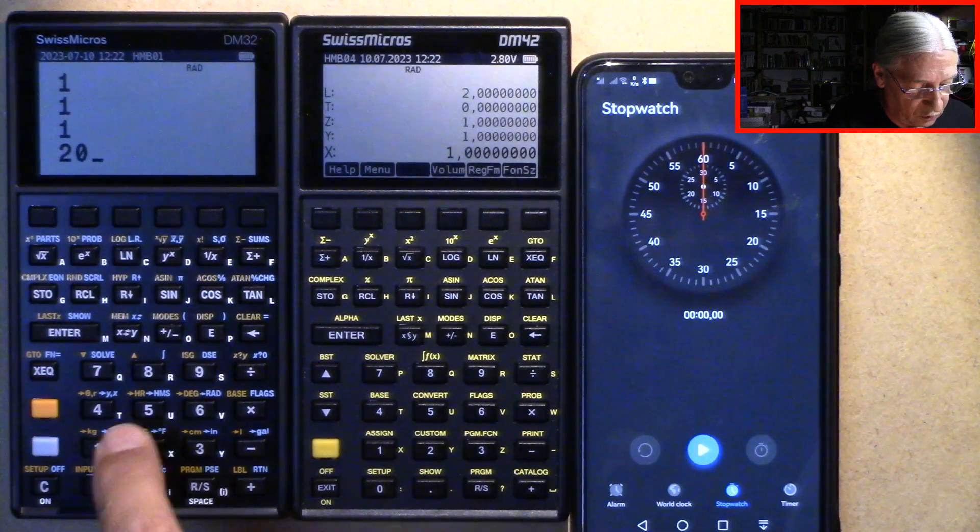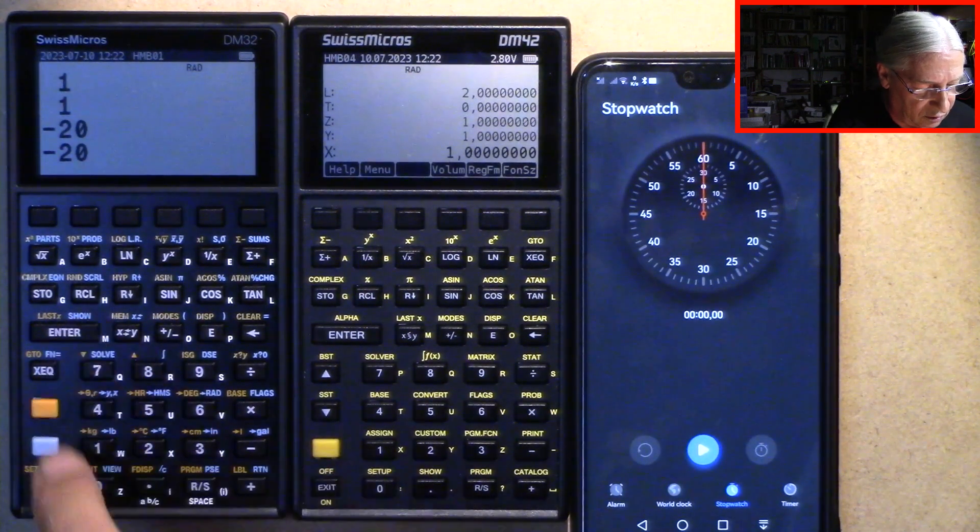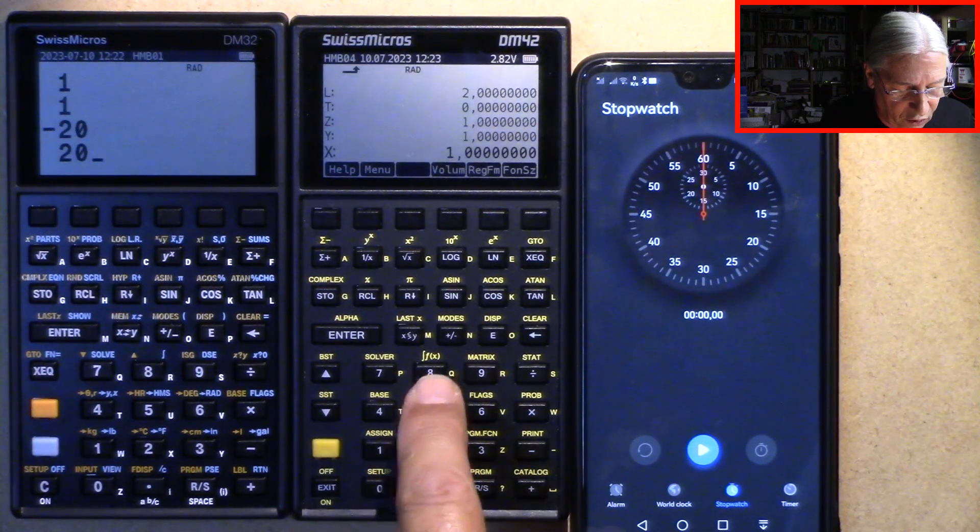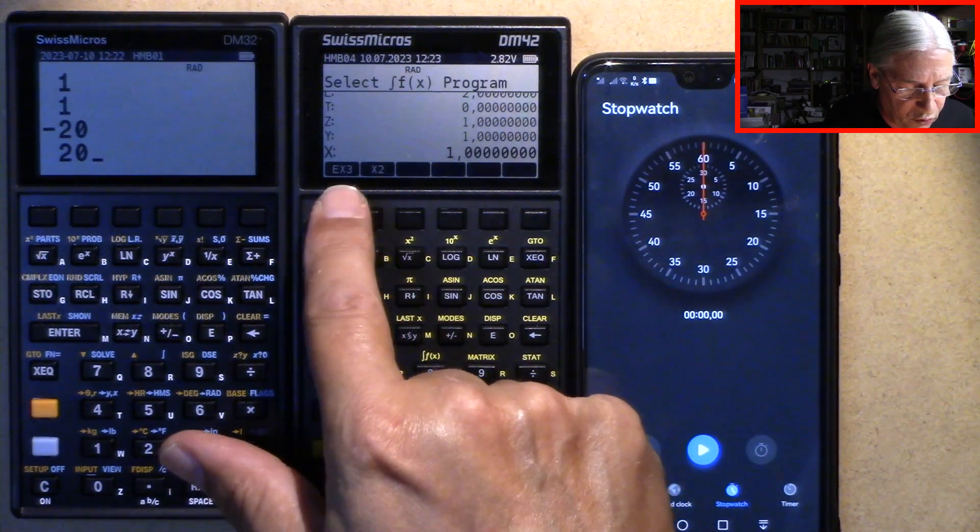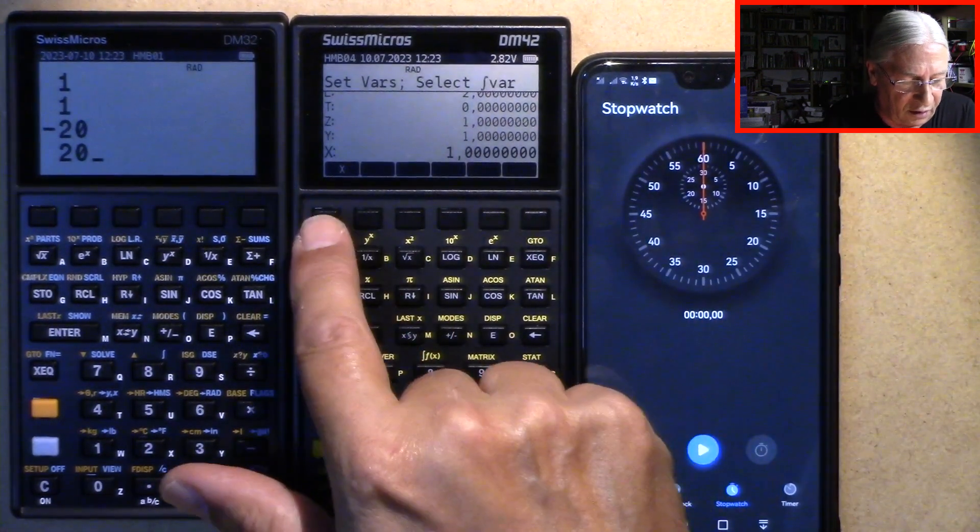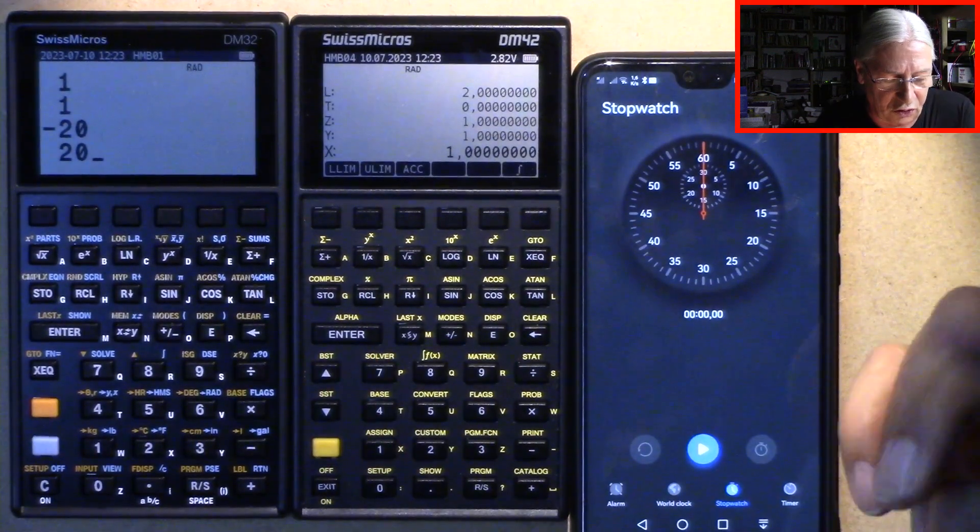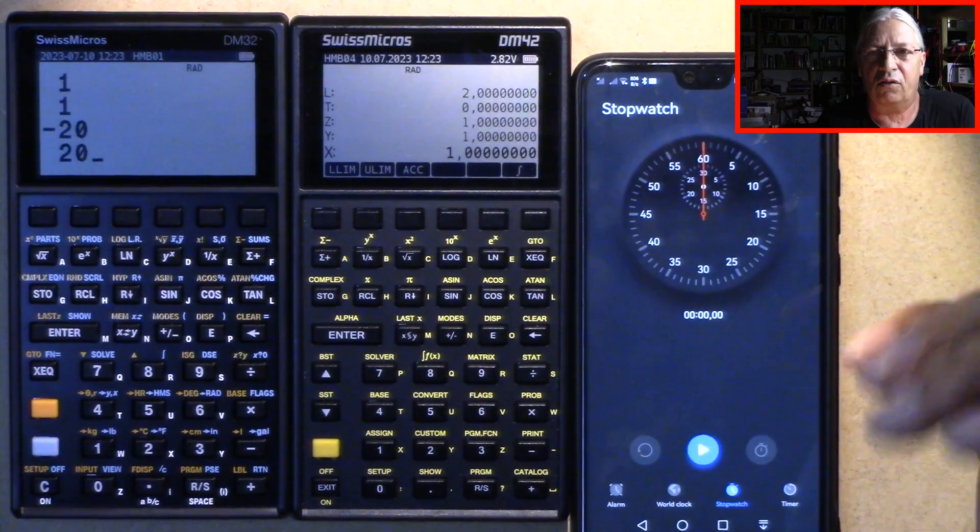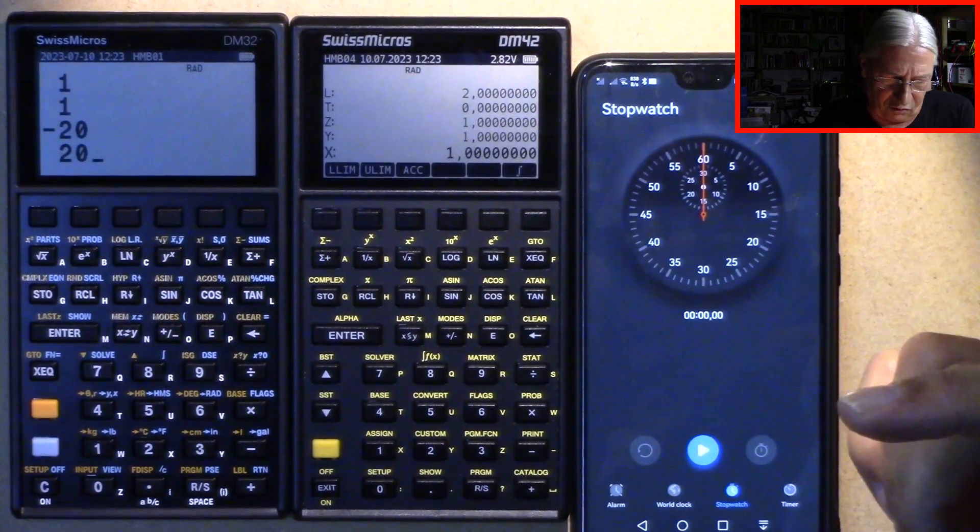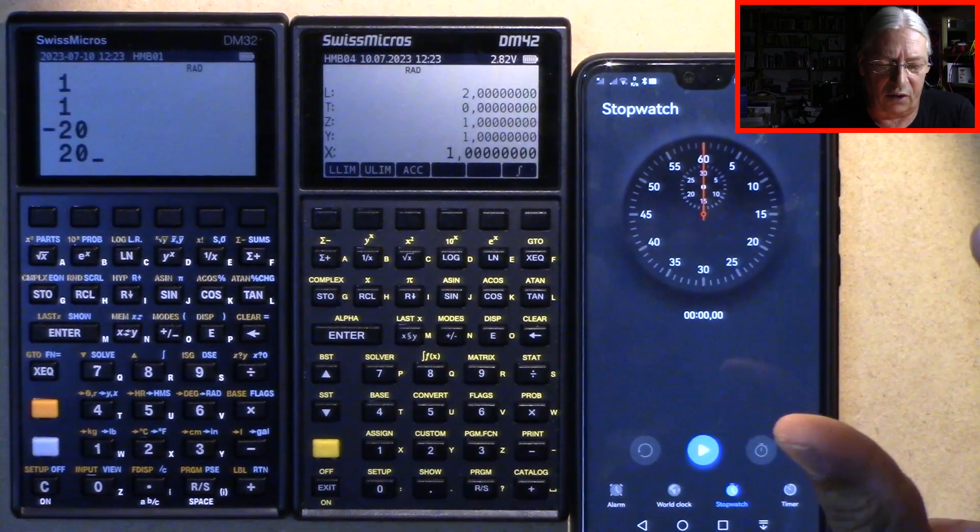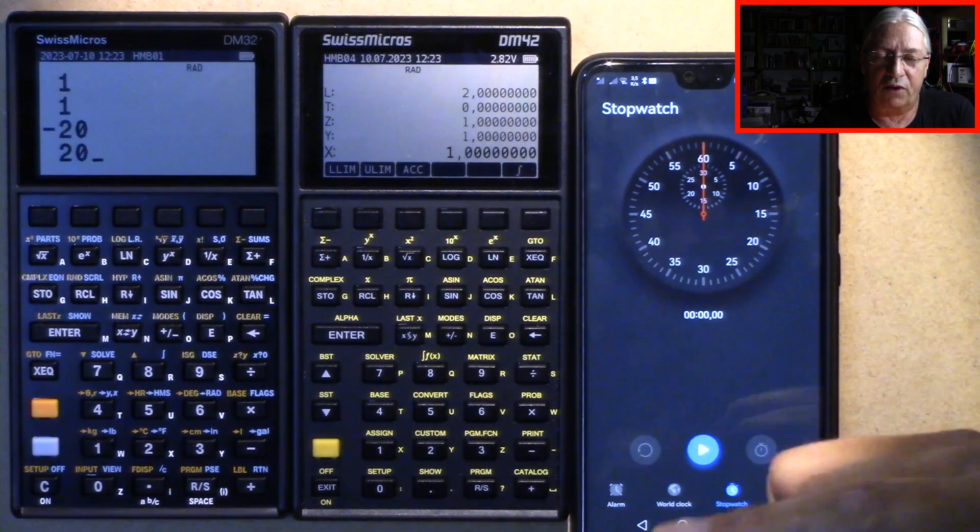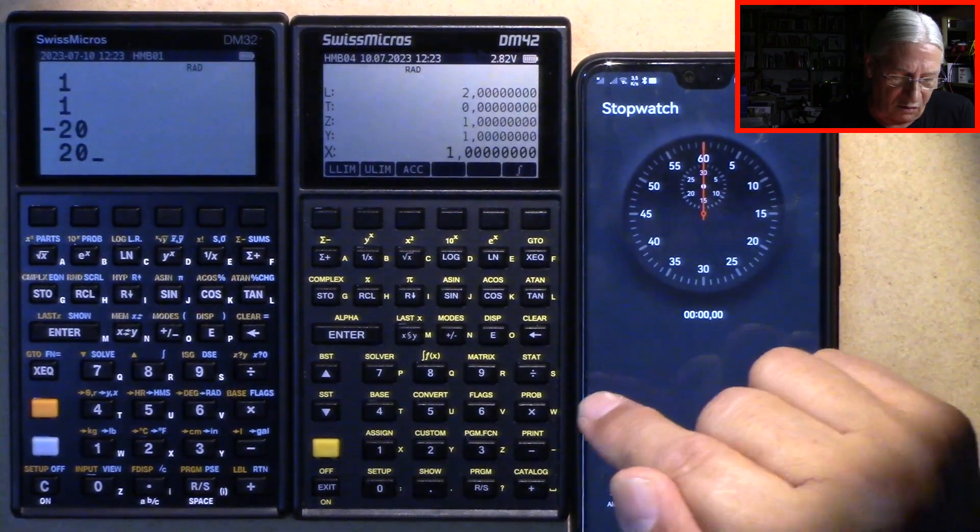So from minus 20 till 20 on the 42. I choose x3, the formula behind it, the function which is integrated here, is e to the power of x to the power of 3. So first you have to calculate x to the power of 3 and this value becomes the exponent for e.